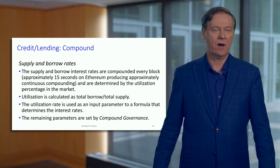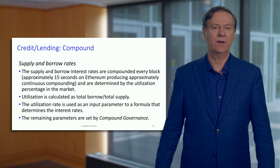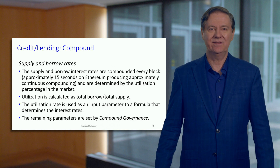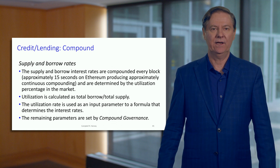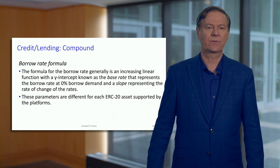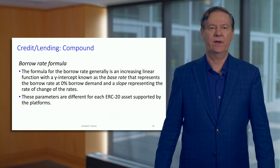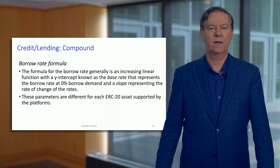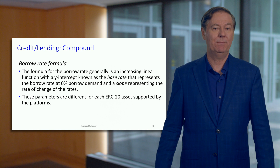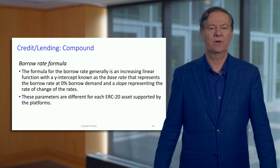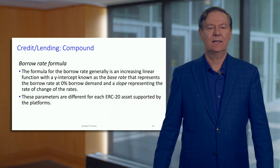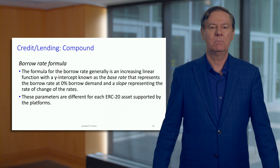There are other parameters set by Compound governance. Compound is a decentralized protocol — like MakerDAO, it has a decentralized governance structure. The borrow formula is an increasing function, and the y-intercept is the base rate, which is the rate where there's zero borrowing demand.